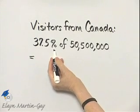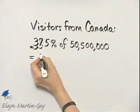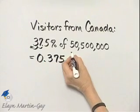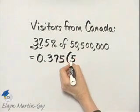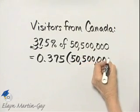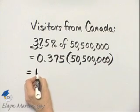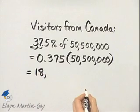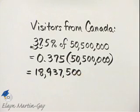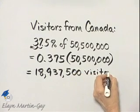Let's write this as an equivalent decimal. Move the decimal point two places to the left and we have 0.375. Remember, "of" means multiplication, so we will multiply that decimal by 50,500,000. Once you perform that multiplication you'll find that you have 18,937,500 — these are the visitors from Canada.